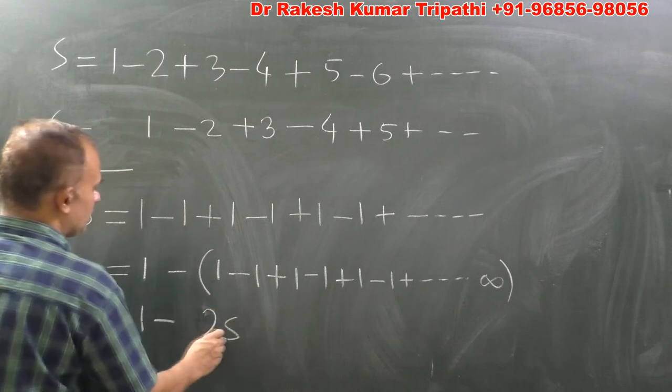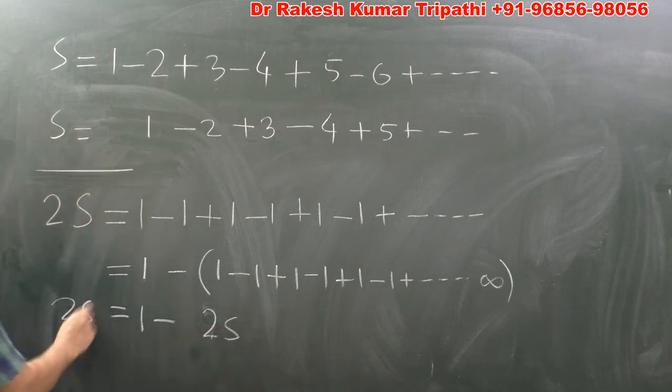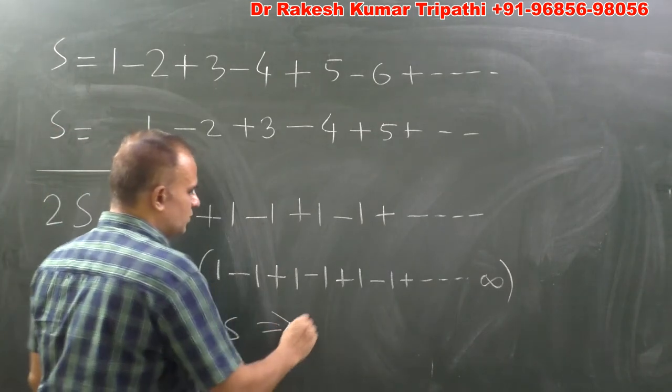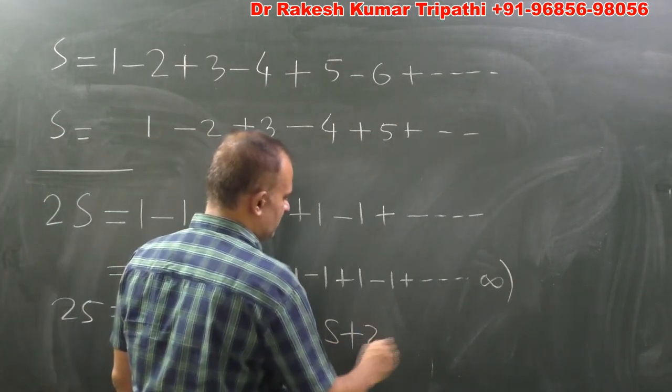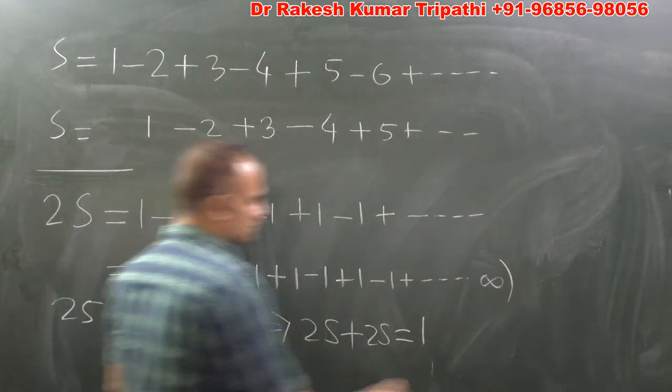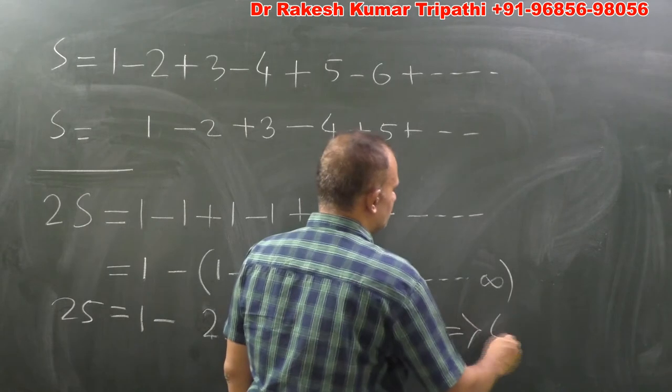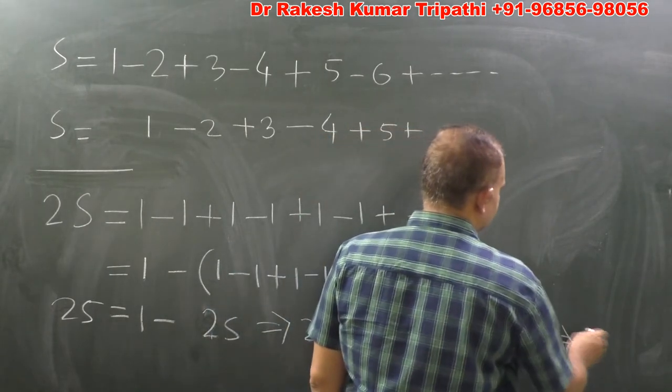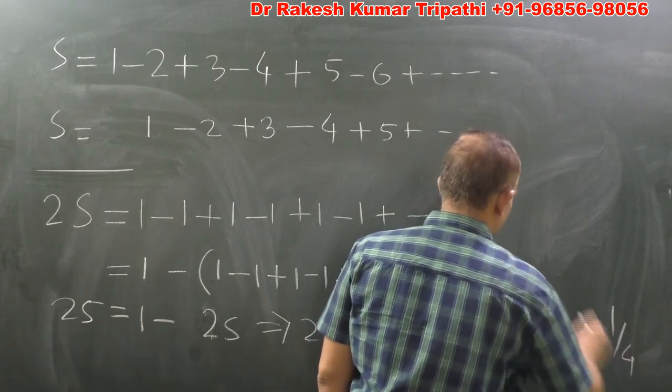So transferring this 2S on the left hand side, we find 2S plus 2S is equal to what? It equals 1, and 2S plus 2S is 4S.